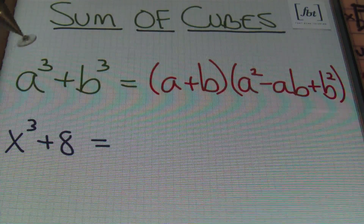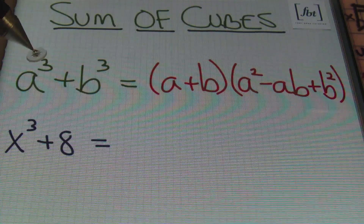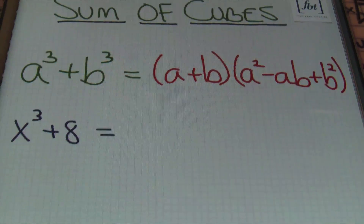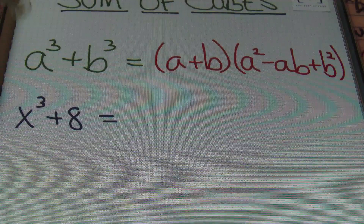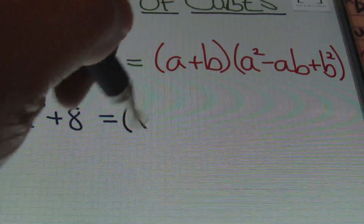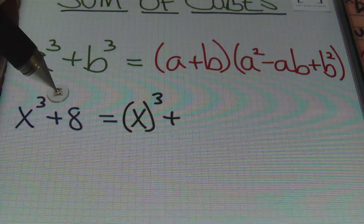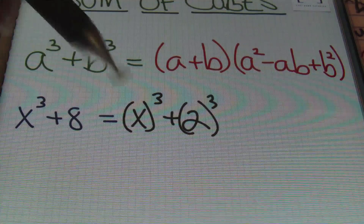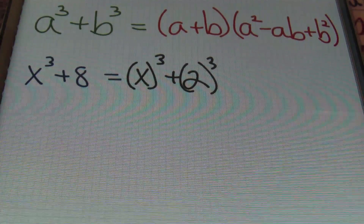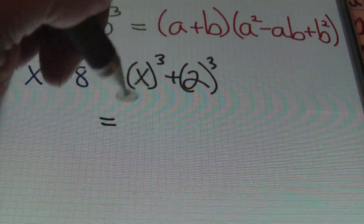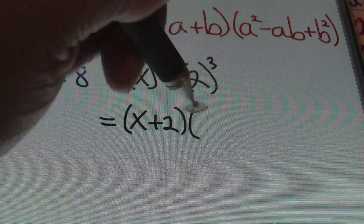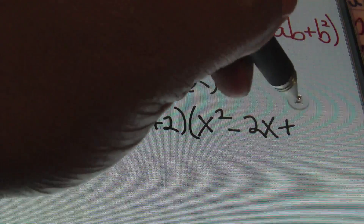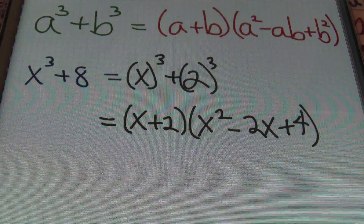When presented with the form a cubed plus b cubed, the factorization pattern will be the cube root of the first term a, plus the cube root of the second term b, times a squared minus ab plus b squared. For example, with x cubed plus 8: x is being cubed, and 2 is being cubed to get 8 — because 2×2×2 = 8. So a = x and b = 2. Plugging into the formula: (x + 2)(x² − 2x + 4). That's the answer.